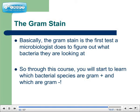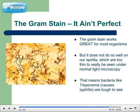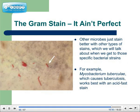Basically, the gram stain is the first test a microbiologist does to figure out what bacteria they're looking at. Through this course, you'll start to learn which bacterial species are gram-positive and which are gram-negative. The gram stain works great for most organisms, but it doesn't do so well on spirilla, which are really too thin to be seen under normal light microscopy. This means that bacteria like Treponema, which causes syphilis, are tough to see. Other microbes stain better with other types of stains. For example, Mycobacterium tuberculosis, which causes tuberculosis, works best with what's called an acid-fast stain — if you try using a regular gram stain on it, you're not going to get really clean results.